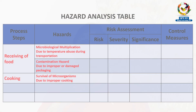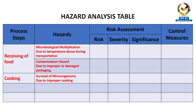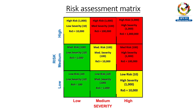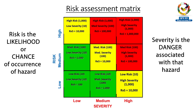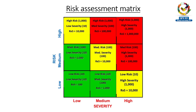Stage number two is about risk assessment of the hazard. If you remember, we wrote down two process steps — receiving and cooking — and for each of them we had some hazards. Now for each of them we will do a risk assessment. This is how our risk assessment matrix looks like. It's a combination of risk and severity.